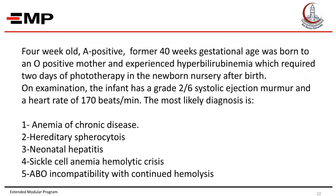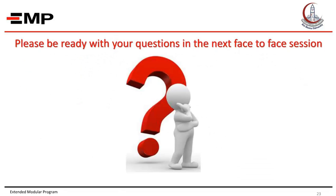Case scenario: A four-week-old newborn, blood group A positive, born at 40 weeks gestational age to an O-positive mother, experienced hyperbilirubinemia requiring two days of phototherapy in the newborn nursery. On examination, the infant has a grade 2 over 6 systolic ejection murmur and heart rate of 170 beats per minute. Consider the most likely diagnosis from the five choices provided, and be ready to discuss the answer in the face-to-face session.